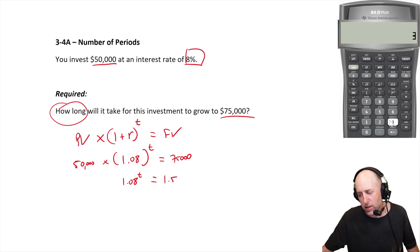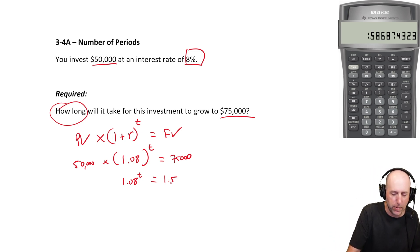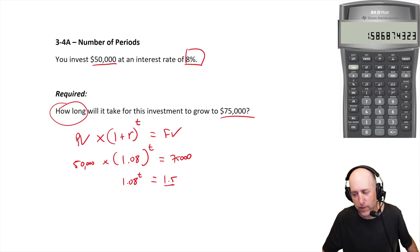I go okay, 1.08 to the power of 3 - is it 3 years? 1.25, I'm not even close. 1.08 to the power of 6 years - is it 6 years? I'm 1.58, I'm too high because I want it to be 1.5. I'm shooting for 1.5.